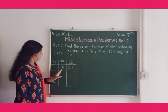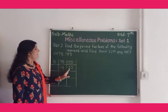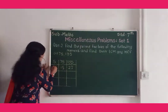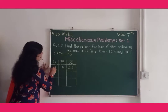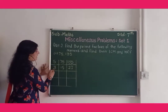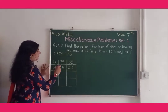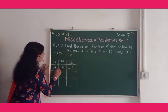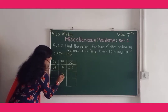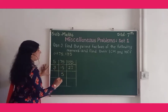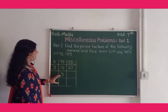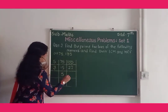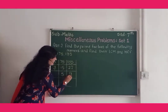These two numbers, 15 and 27, are divisible by 3. So here we write 3. When 15 is divided by 3, the answer is 5. When 27 is divided by 3, the answer is 9.